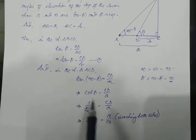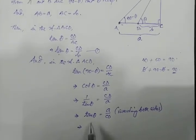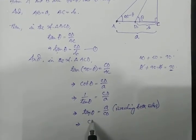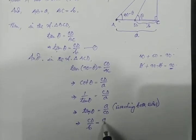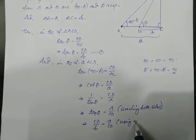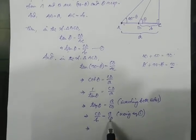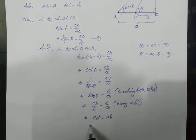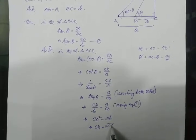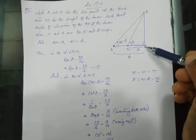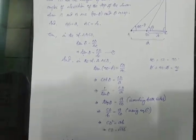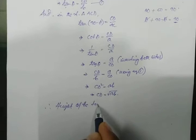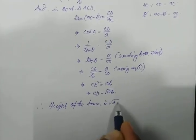Now I would like to use the value of tan theta here. Using equation 1, tan theta can be replaced by CD over b. So CD over b equals a over CD. Cross multiplying, CD times CD gives CD squared equals a times b. That means CD equals root over ab, where CD is the height of the tower. Therefore, the height of the tower is root over ab.